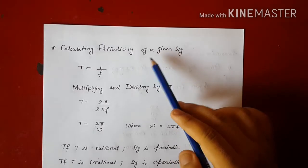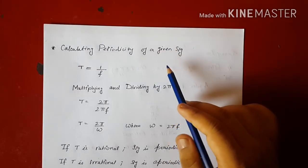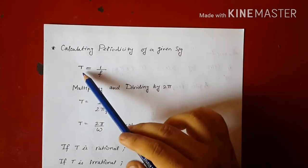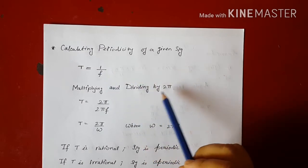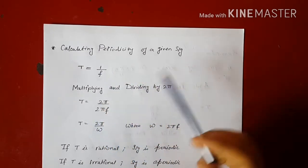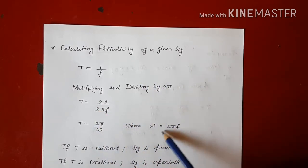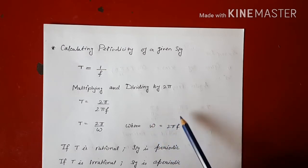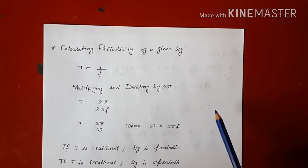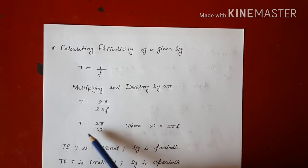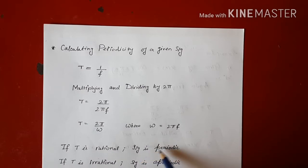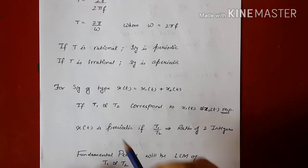Now let us look at how to determine whether a given signal is periodic or aperiodic. We know that T = 1/f, that is time equals one over frequency. Multiplying and dividing the right-hand side by 2π, we get T = 2π / (2πf). Since 2πf equals ω, the angular frequency, we have T = 2π / ω. When we substitute ω from a given signal into this formula, if T is a rational number then the signal is periodic, and if T turns out to be irrational then the signal is aperiodic.